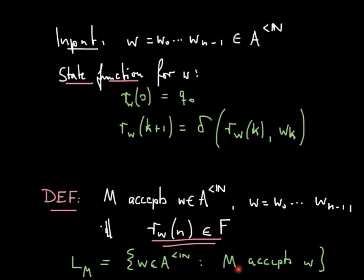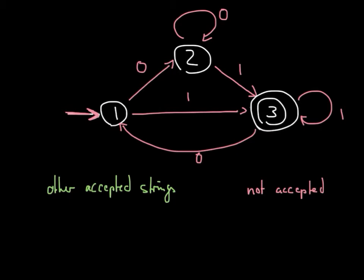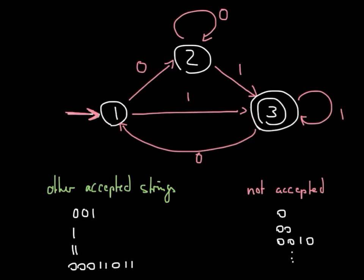Looking at more examples, we can see that strings like 001, 1, 11, or 0001 are accepted, while strings like 000, 0010, and others are not. If you look at it long enough, you will see that this automaton accepts precisely those strings that end with a one.